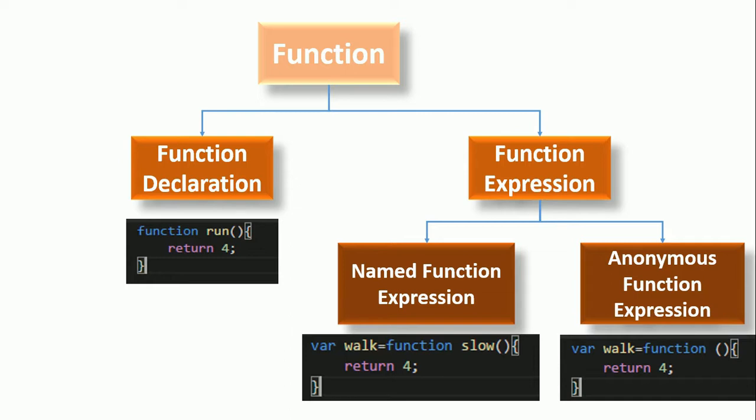The key difference between function declaration and function expression is: if a function starts with the keyword 'function' — that is, if the first word in the function line is 'function' — then it is a function declaration. If the first word starts with a variable assignment, then it is a function expression. Now let's see what hoisting is.